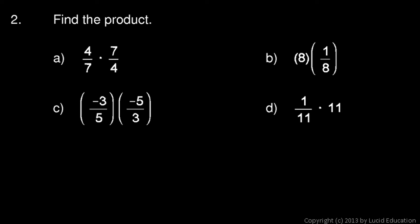Now here we're told to find the product, and it turns out that all four of these problems have the same answer. In every single case we have one number multiplied by its reciprocal. 4/7 and 7/4, when you multiply a number and its reciprocal the result is 1.